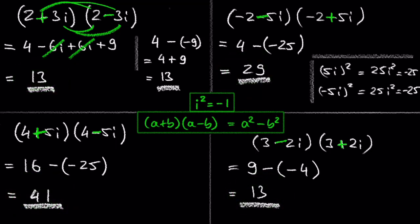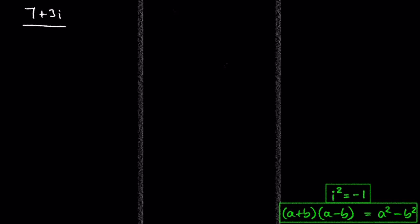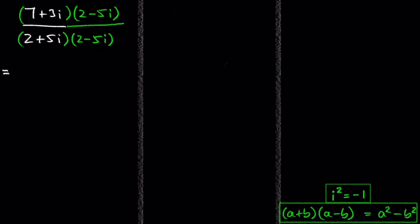Now we are ready to divide complex numbers. Let's say we want to divide 7 plus 3i by 2 plus 5i. The best way to divide complex numbers is to write them as a fraction and to make a real number out of the denominator. We do this by multiplying 2 plus 5i by its conjugate 2 minus 5i. Don't forget to also multiply the top of the fraction by 2 minus 5i to get an equivalent fraction.